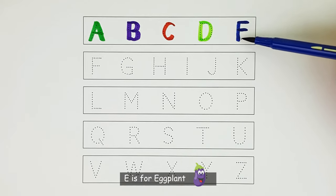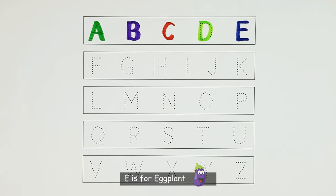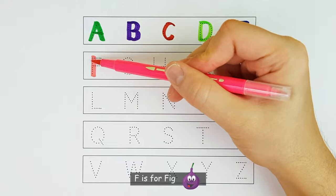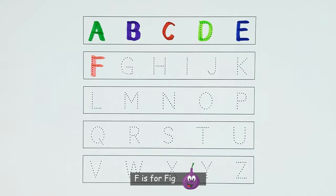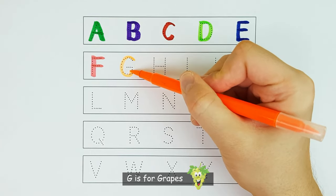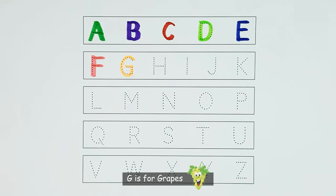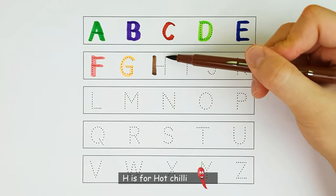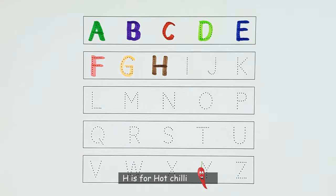E. E is for eggplant. E. F. F is for fig. F. G. G is for grapes. G. H. H is for hot chili. H.